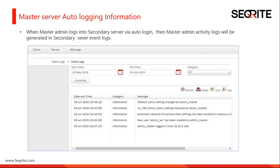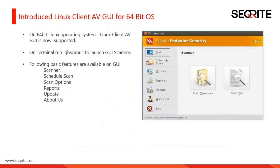Master server auto logging information has been added. If you follow a master-slave architecture in your organization and a master admin logs into the secondary server via auto login, the master admin activity log will be generated in secondary event logs so we can identify who changed a particular setting. If changed by the master admin, the message will include 'admin_master'.